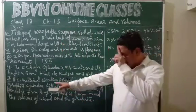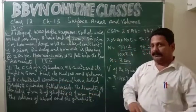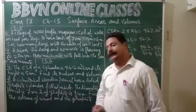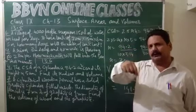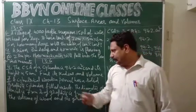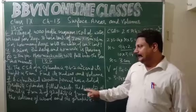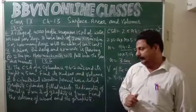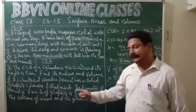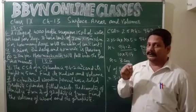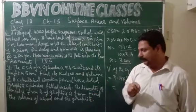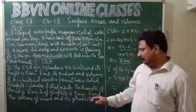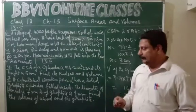A cylindrical wooden pencil — a pencil which is in the shape of a cylinder — has a solid graphite cylinder filled inside. The diameter of the entire pencil is 7 millimeters, so the radius is 7 upon 2 millimeters. The diameter of graphite is 1 millimeter, so the radius of the graphite will be 1 upon 2 millimeters. We have to find the volume of wood in the pencil and the volume of graphite separately.